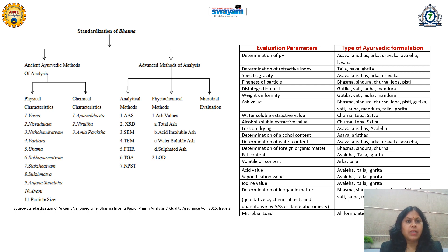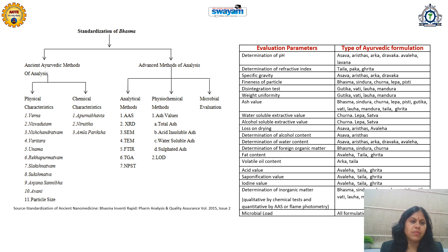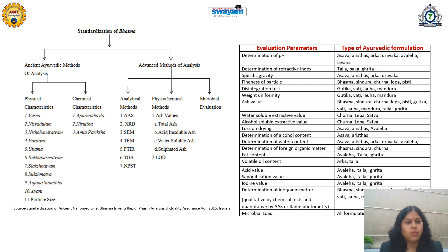This is just one example of the standardization of bhasma, comparing ancient methods as well as advanced modern methods of analysis. In ancient methods of analysis of bhasma, physical as well as chemical evaluation parameters are mentioned. In physical parameters: Varana relates to color, Nishavadhutam relates to metallic properties, Nishachandravatam relates to metallic luster, and Varitara refers to how fine the powder is, or based on surface tension.